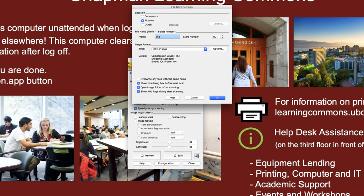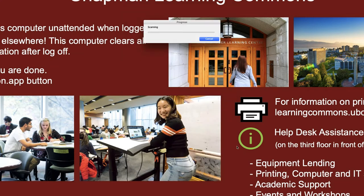Then click Scan, and a File Save Settings window will appear. To compile multiple scans in one file, select PDF under the Type menu. This is especially important if you're looking to scan an article or compile a portfolio and you want all the pages you scan to be in one file.